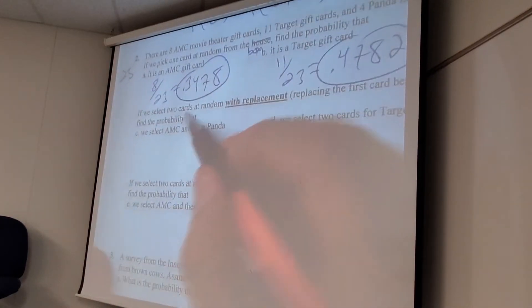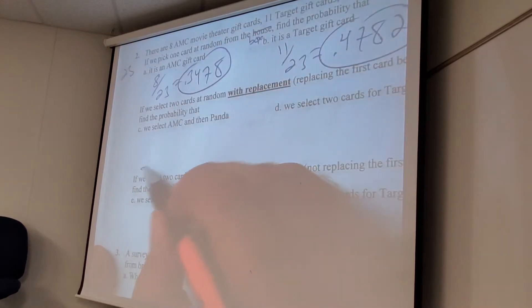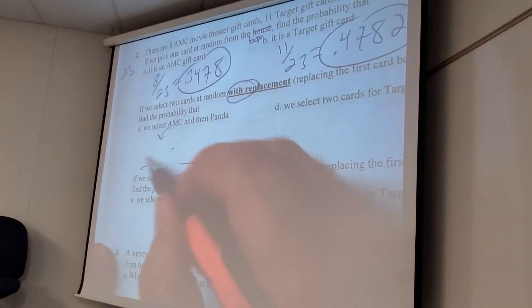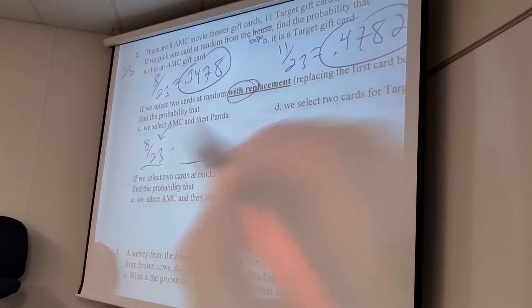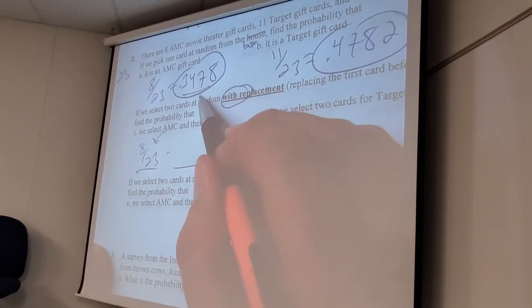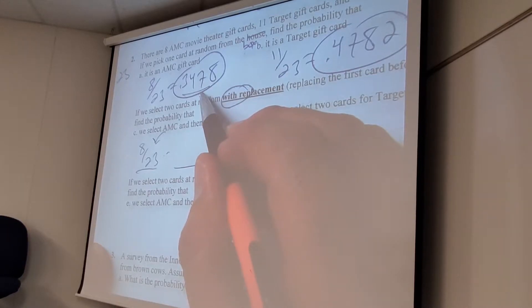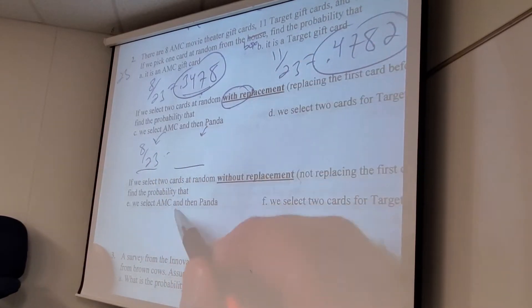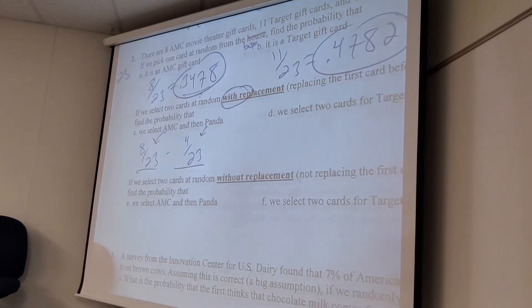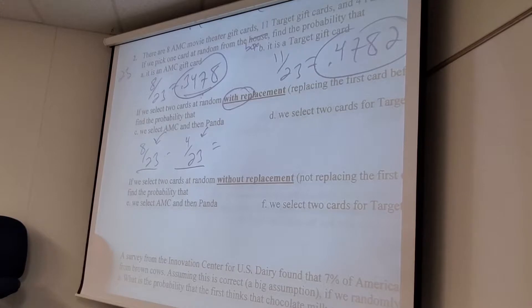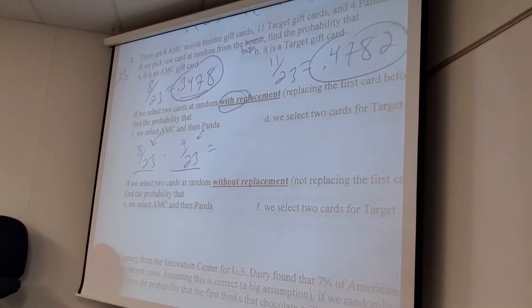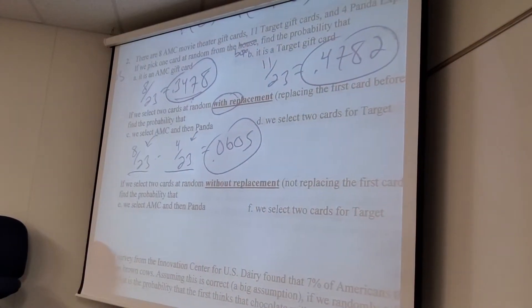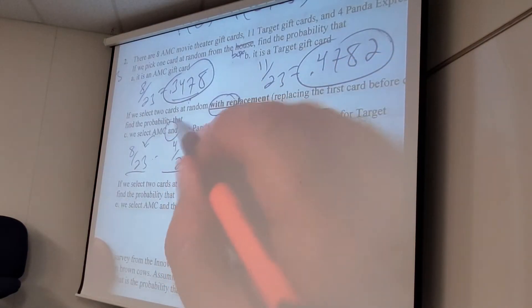Now, I'm going to pick two cards, which means I need how many spots? Two. What's probably the first one's AMC? I'm doing it with replacement, right? So, what's probably the first one's AMC? 8 out of 23. Don't use this because that's not right. We rounded this thing. Use the 8 out of 23. That's completely right. And then what's the Panda? 4 out of 23. Because I didn't lose any cards yet. I did it with replacement. And then whatever the hell that is. I have no idea. 0.0605.